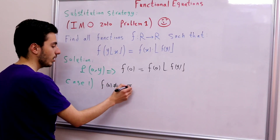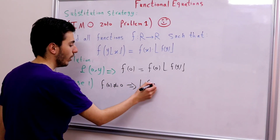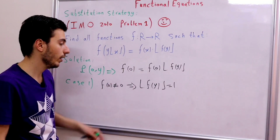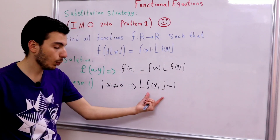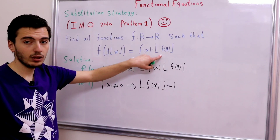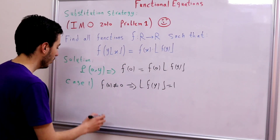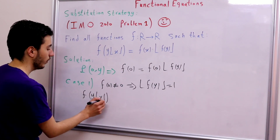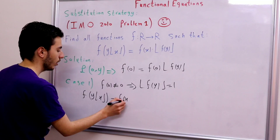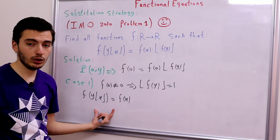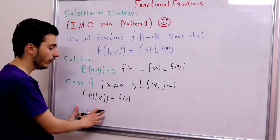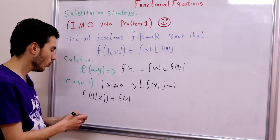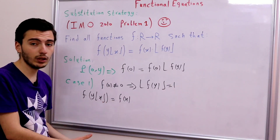In Case 1, where f(0) ≠ 0, we can divide both sides by f(0) to get ⌊f(y)⌋ = 1 for all y. Since ⌊f(y)⌋ = 1, we can rewrite the original functional equation as f(y) · ⌊x⌋ = f(x), which means our function f is constant.